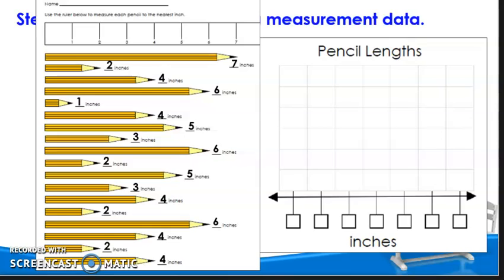In Step 2, students will create line plots. On the line plot shown, they will use the measurements from Step 1's measuring pencils task. The shortest pencil is 1 inch long, and the longest pencil is 7 inches long. These should be the end points of the number line.